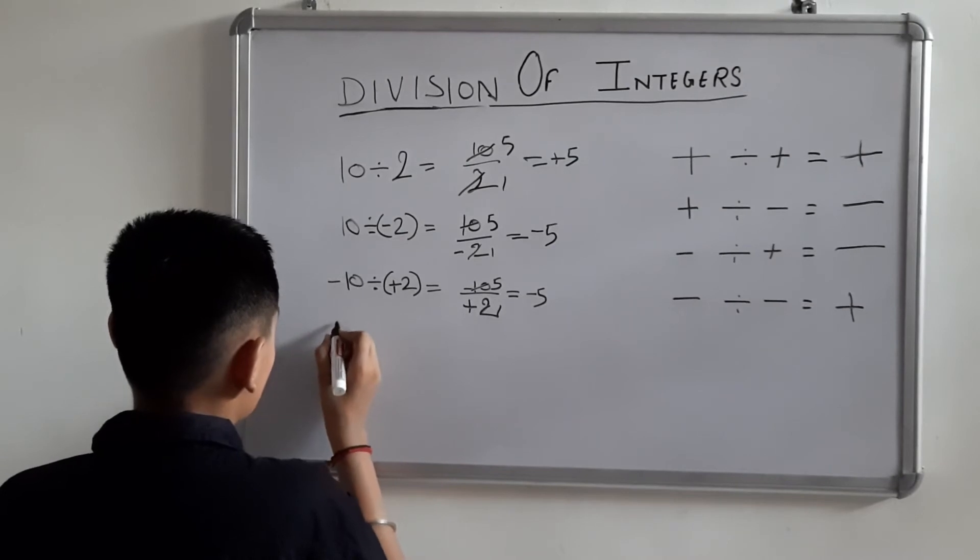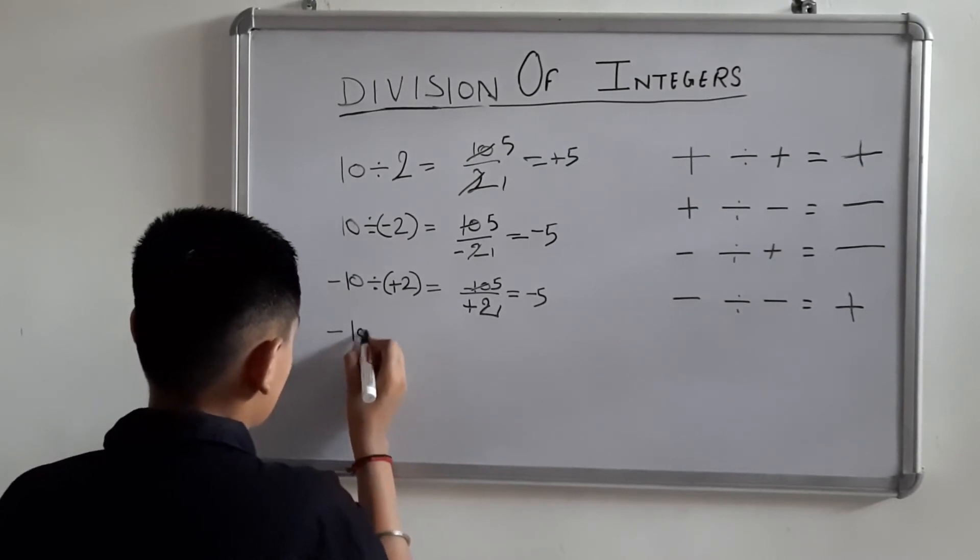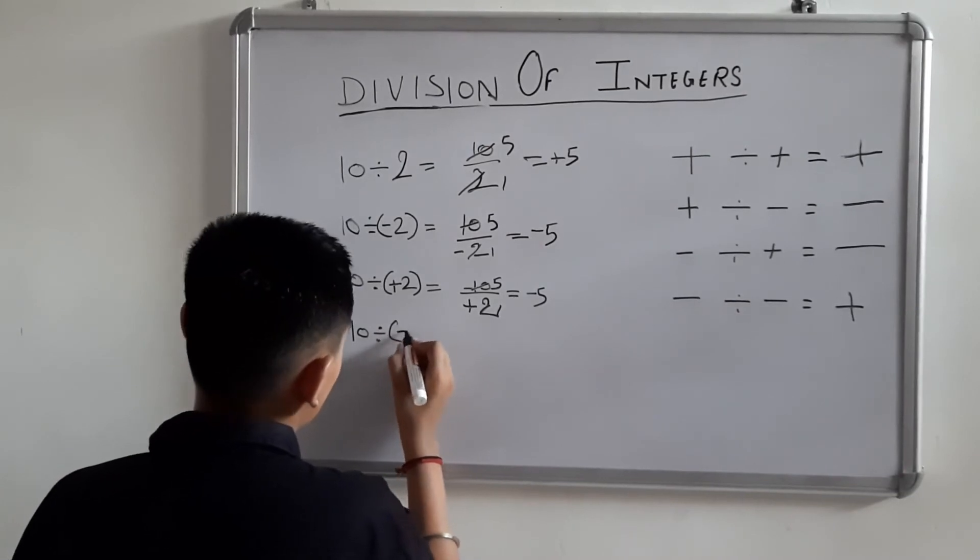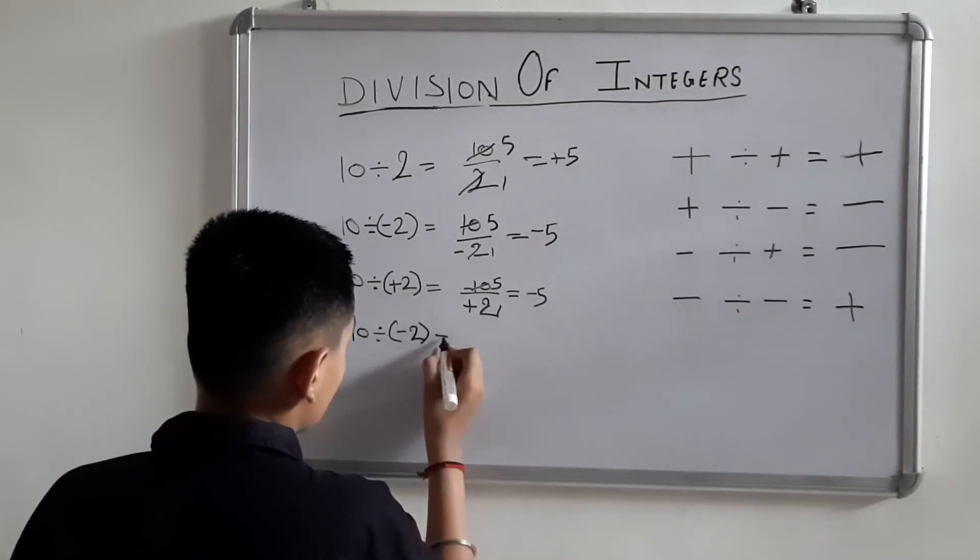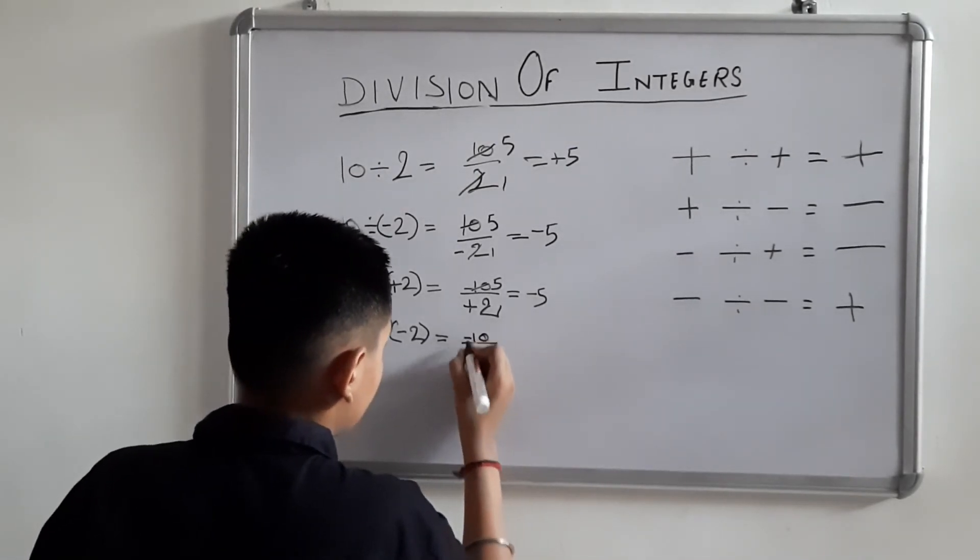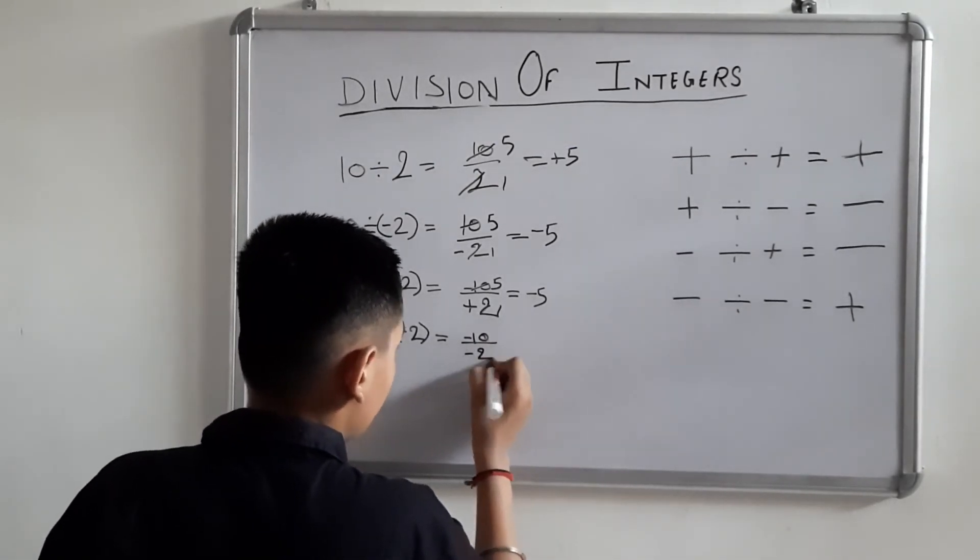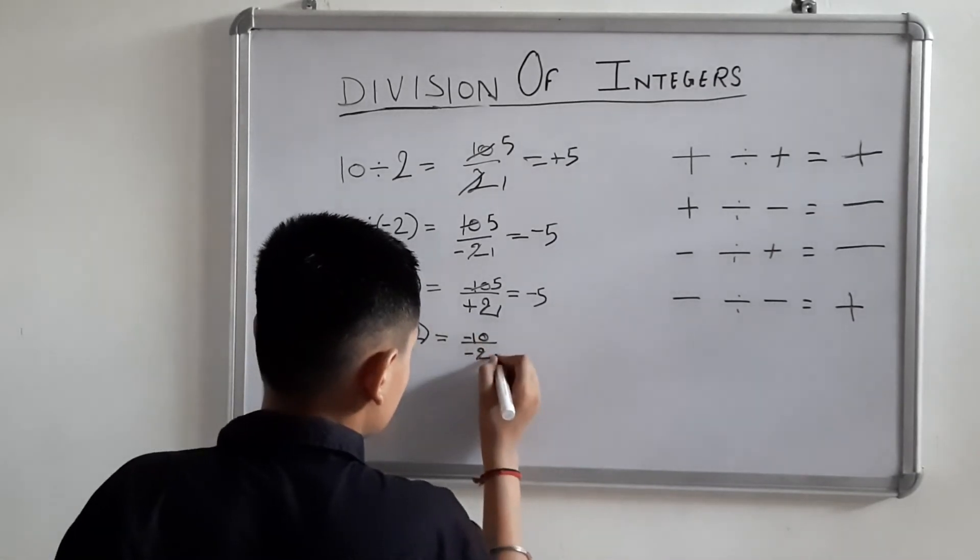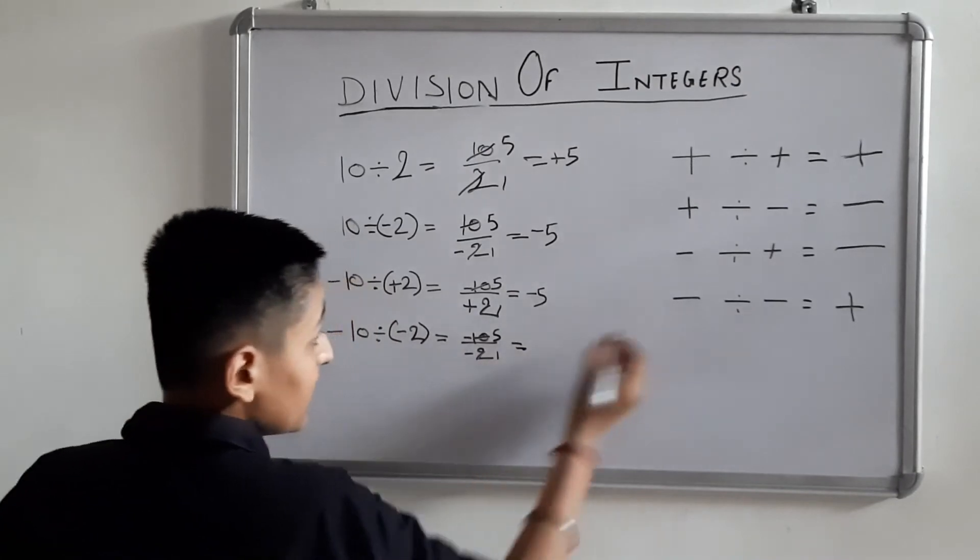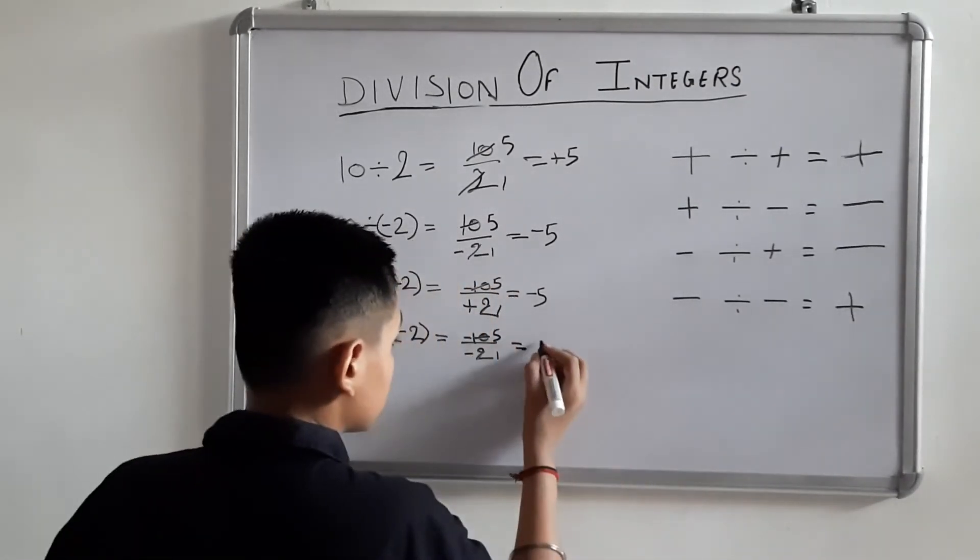Then minus 10 divided by minus 2. 10 of minus into 2 of minus. Ignore the signs, simple divide. Minus into minus equals plus.